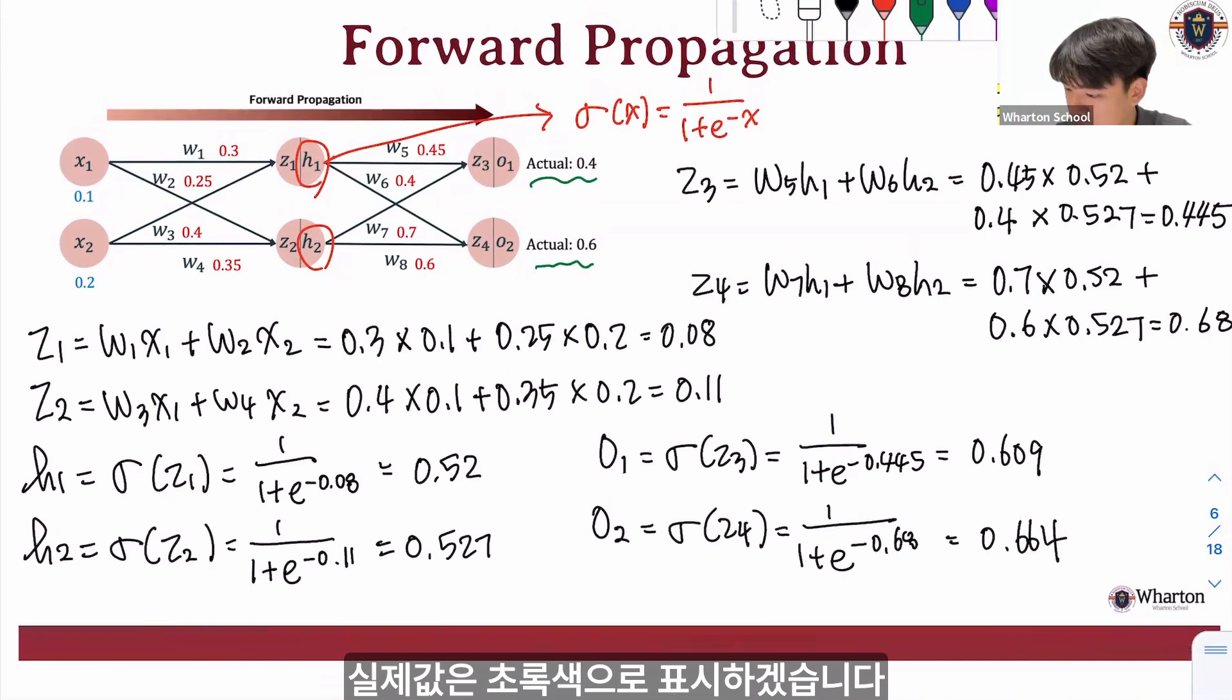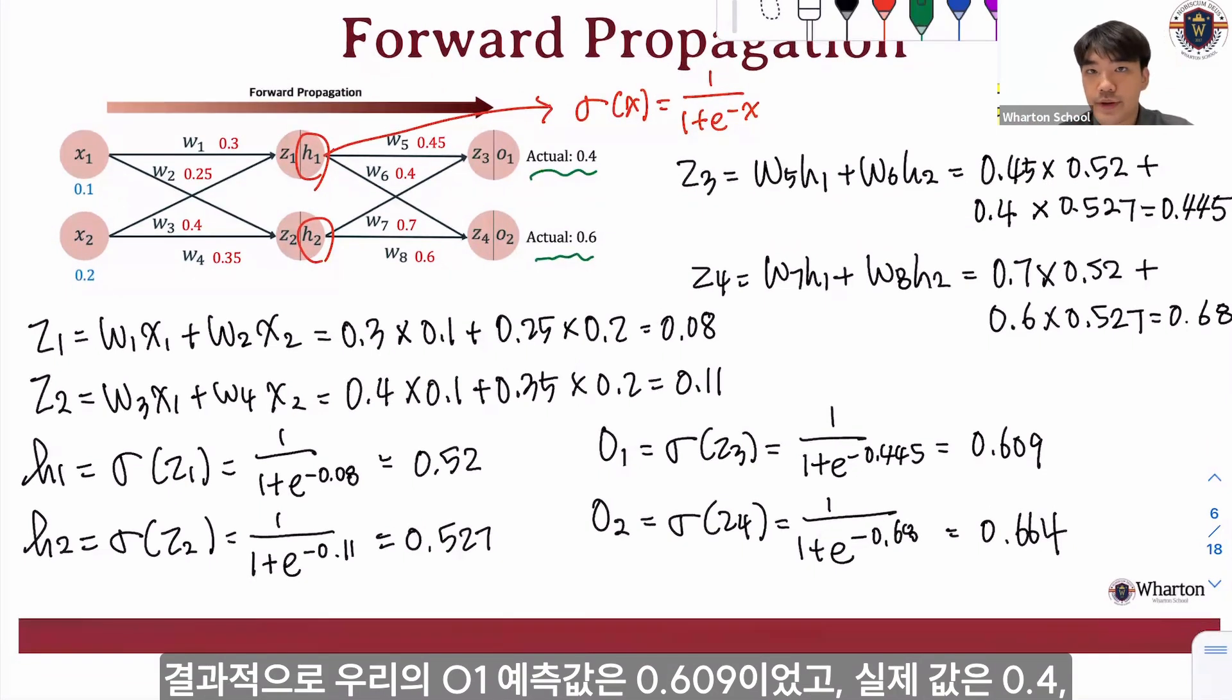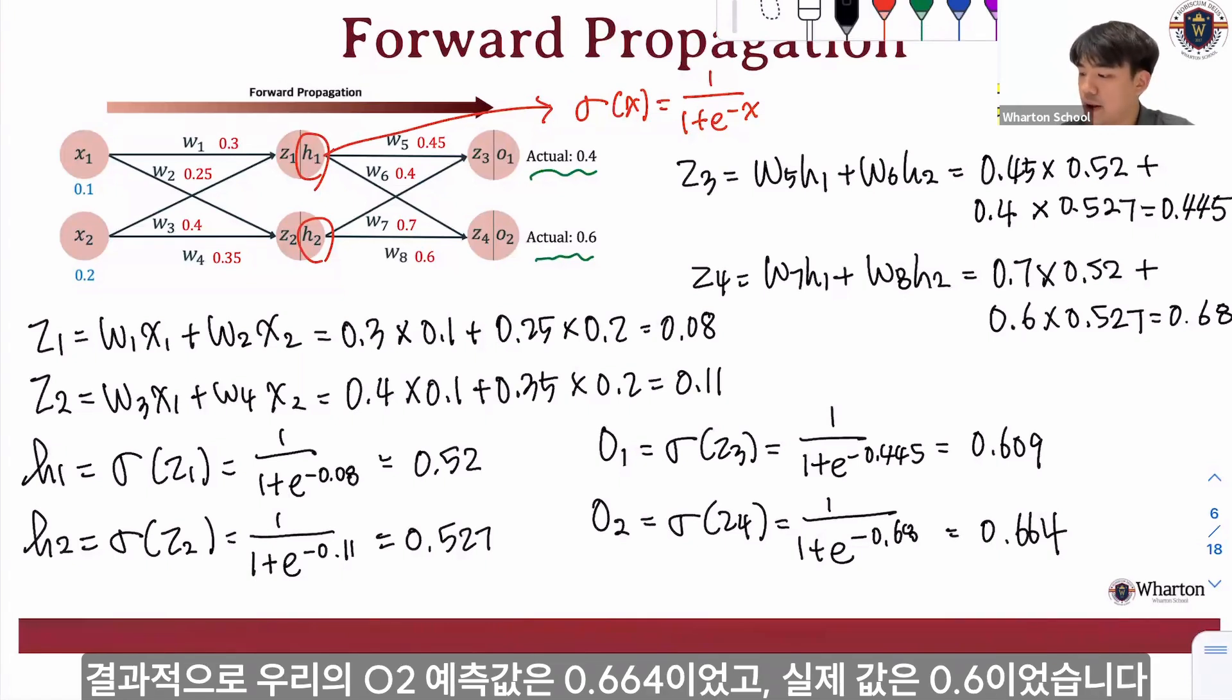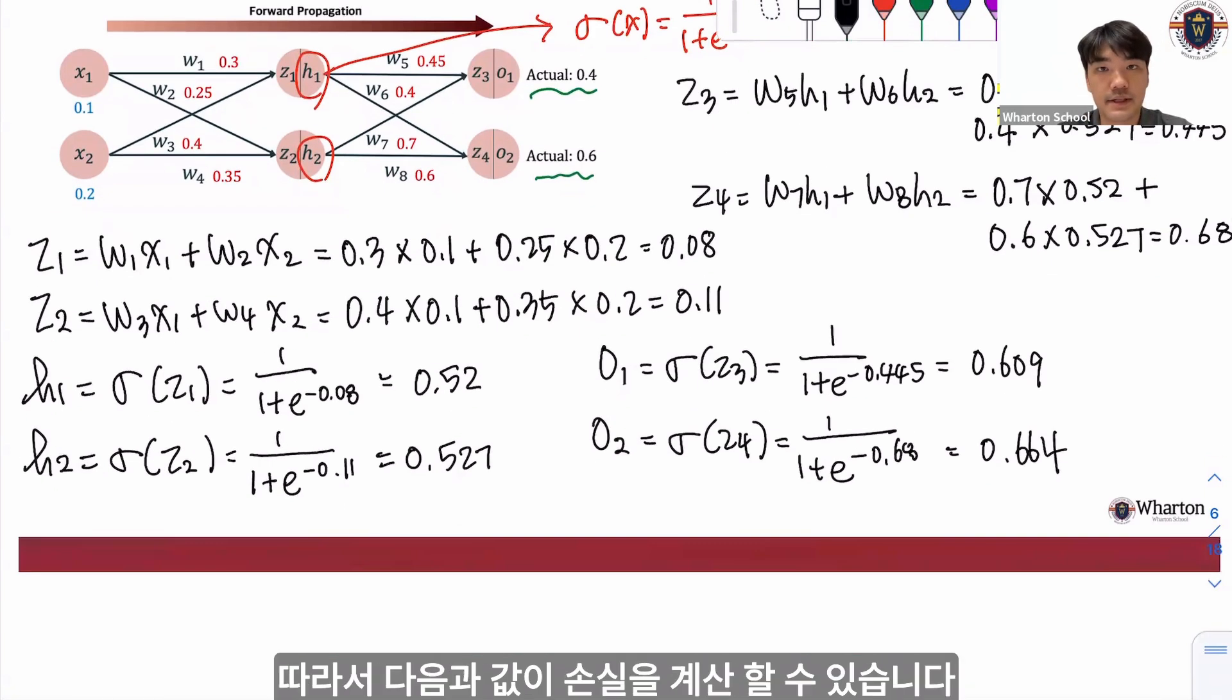I'll mark as green right here. So here we had predicted values of 0.609 and the actual value of 0.4 and predicted value is 0.664 and the actual value of 0.6. So we can calculate the loss.